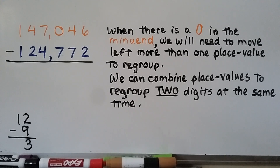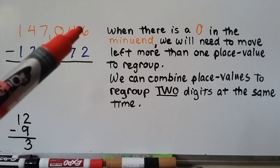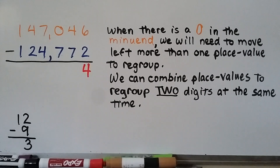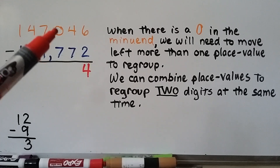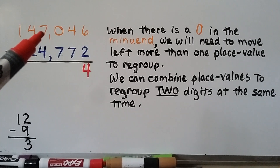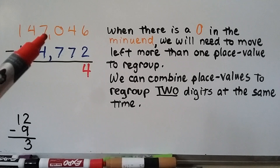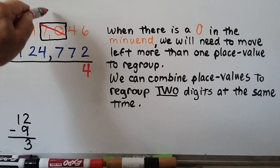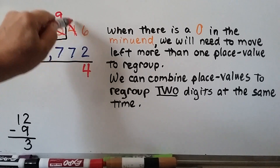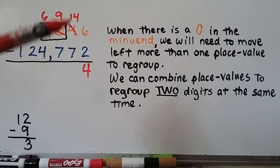When there's a 0 in the minuend, we will need to move left more than one place value to regroup. We can combine place values to regroup two digits at the same time. Starting in the ones place: 6 minus 2 is 4. Now we have 4 minus 7 and we can't. When we go to the tens place to regroup, we can't because it's a 0. So we go to the hundreds place. We put the 7 and the 0 together as a 70 and regroup it: if we take 1 away from 70, we have 69, and the 4 now becomes a 14. 14 minus 7 is 7.